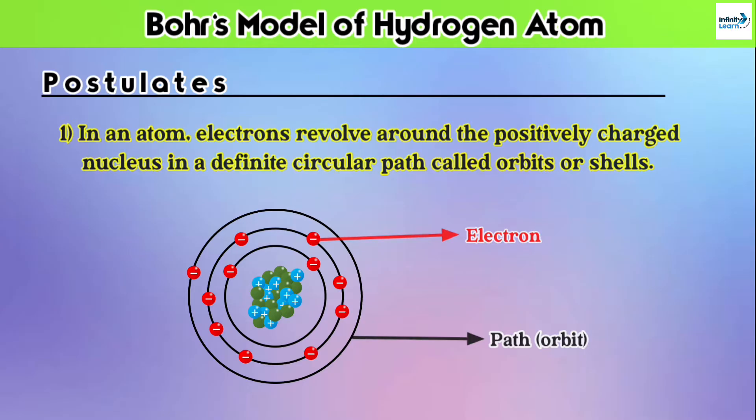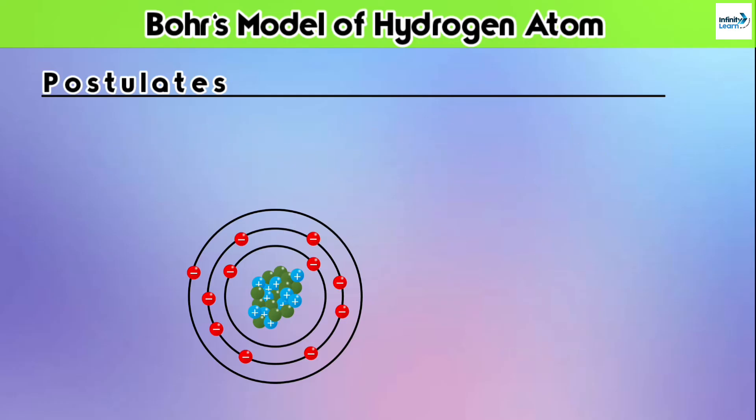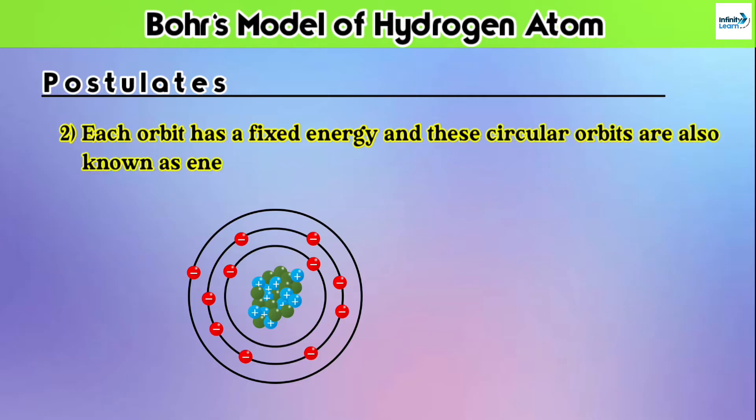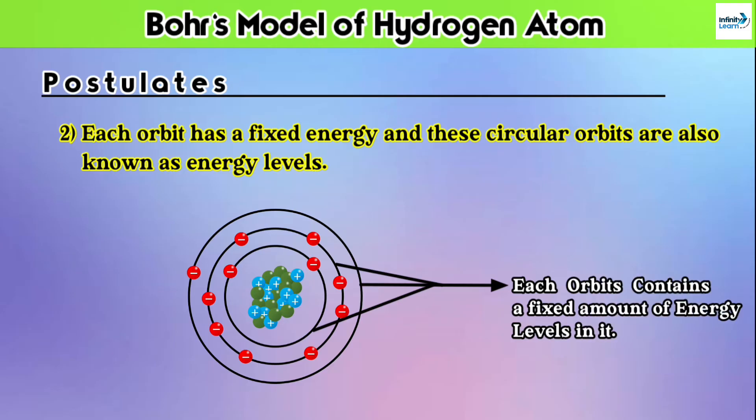The second postulate is: each orbit has a fixed energy, and these circular orbits are also known as energy levels. Simply, every orbit contains a fixed amount of energy levels in it because electrons are revolving in a fixed path due to the electrons' fixed energy levels. That's why their paths can also be termed as energy levels of those particular electrons.